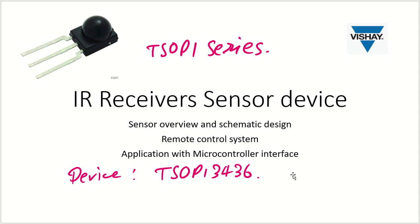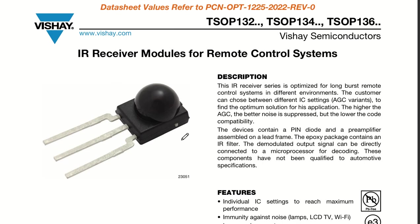Let us directly go into the device datasheet, where we have various options - a lot of other parts are also available based on different specifications or frequency. We will understand the different parameters and aspects to choose a particular IR receiver device. Let us open the datasheet of the TSOP 1 series, which covers TSOP 132, TSOP 134, and TSOP 136. Our main concern is we will be using the TSOP 134 series.